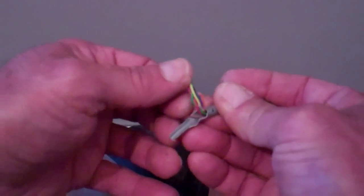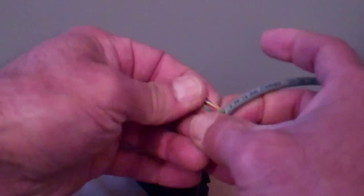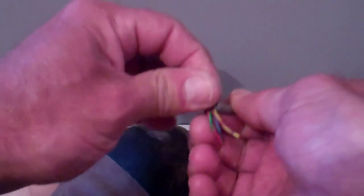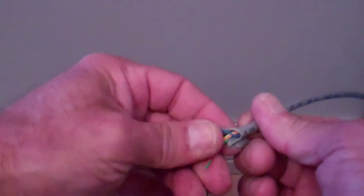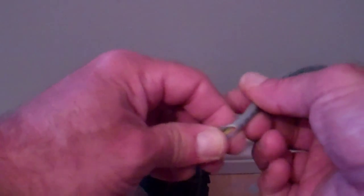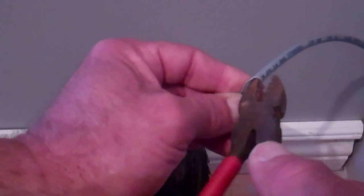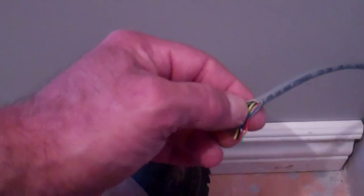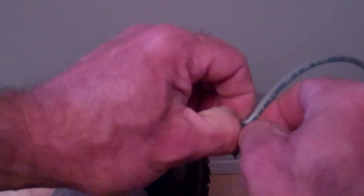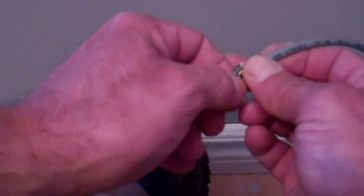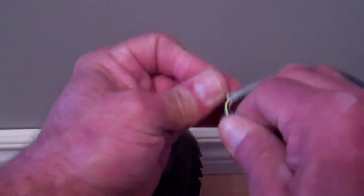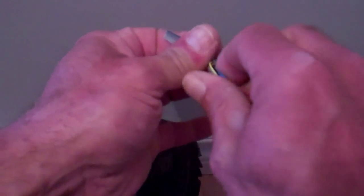If we open up the Cat 5 cable here, sometimes there's a string in there that keeps the cable together, and we can pull that back. This particular cable doesn't have one. So what I'm going to do is just carefully snip that cable back. Make sure you don't damage any of your wires.